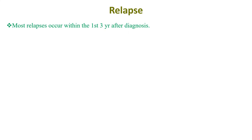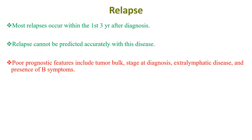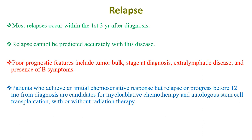Most relapses occur within the first three years after diagnosis, and relapse cannot be predicted by early disease characteristics. Poor prognostic features include tumor bulk, stage at diagnosis, extra-lymphatic disease, and the presence of B symptoms. Patients who achieve an initial chemo-sensitive response but relapse or progress within 12 months from diagnosis are candidates for myeloablative chemotherapy and autologous stem cell transplantation, with or without radiation therapy.